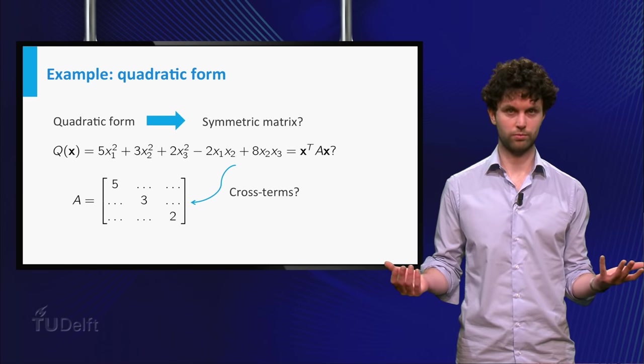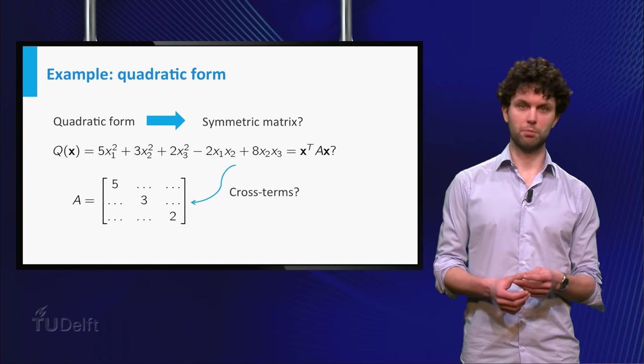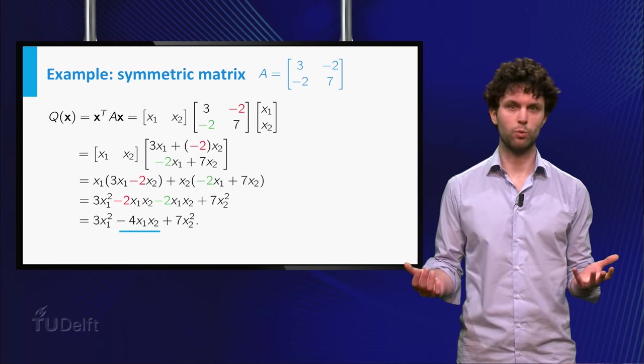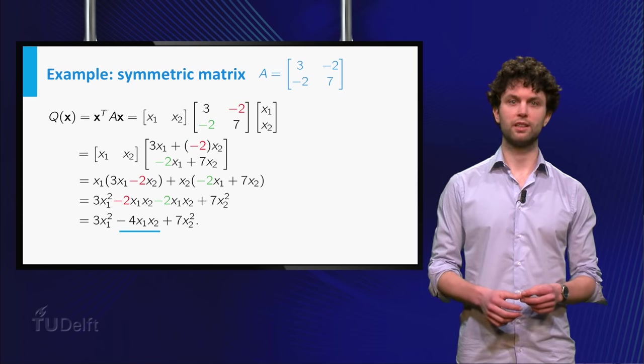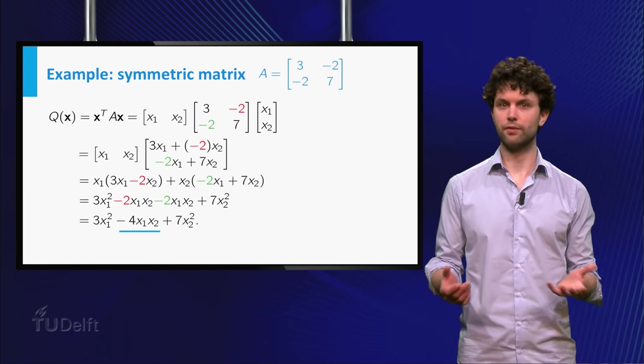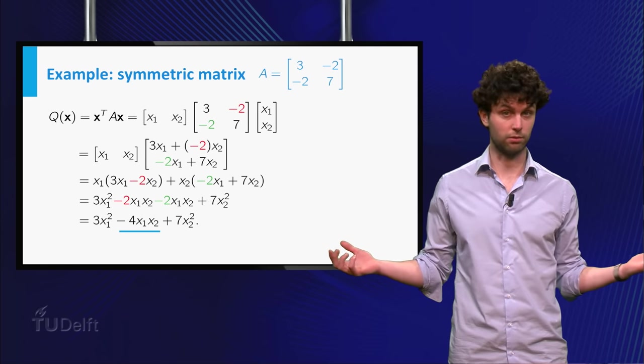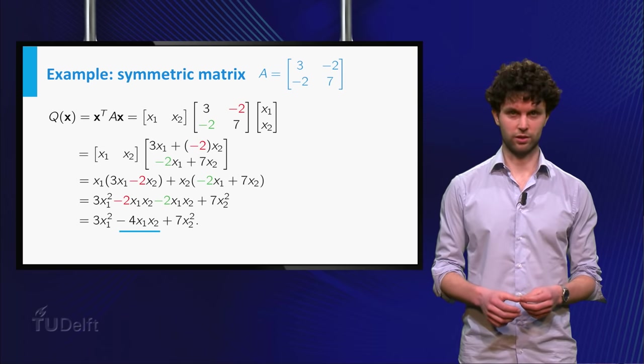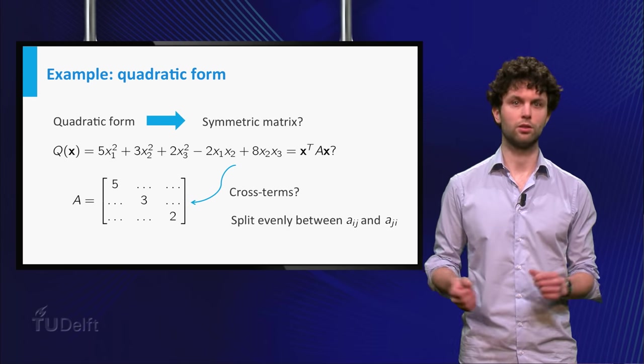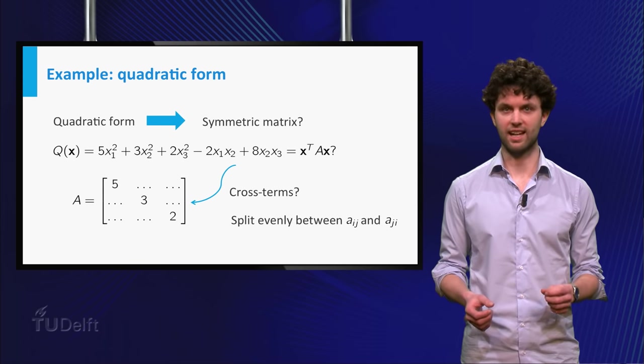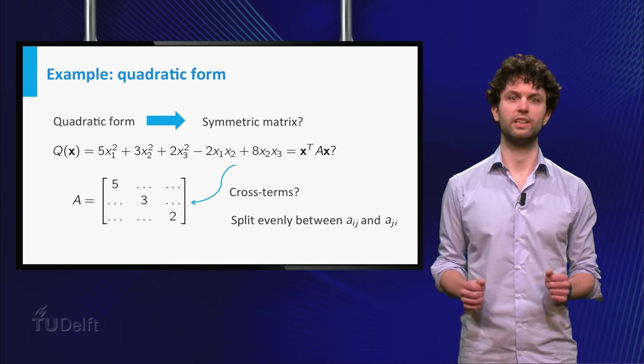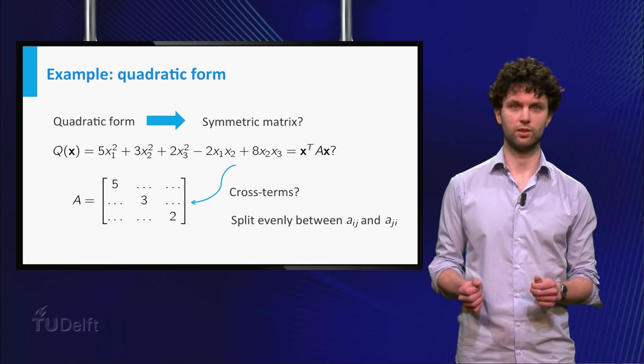How do we deal with the cross-terms? Let's go back to the previous example and recall that the coefficient of x₁x₂, which was minus 4, originated from the 1,2 and 2,1 entries of A, which were both equal to minus 2. So now we reverse this process. That means that in general, the coefficient of the cross-terms xᵢ times xⱼ has to be split evenly between the i,j and j,i entries of the matrix A.